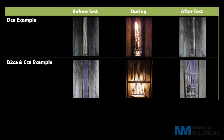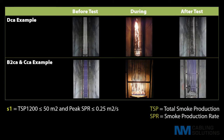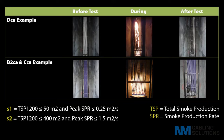The smoke production classification has three levels. S1 has the following limits: total smoke production of 50 square meters with a peak smoke production rate of less than 0.25 square meters per second. S2 is less than 400 square meters at a rate of no more than 1.5 square meters per second.